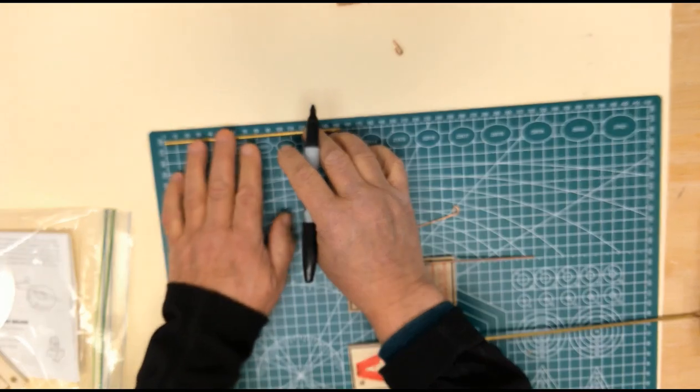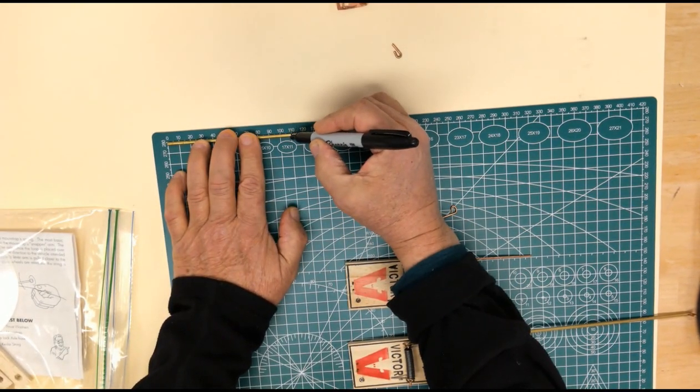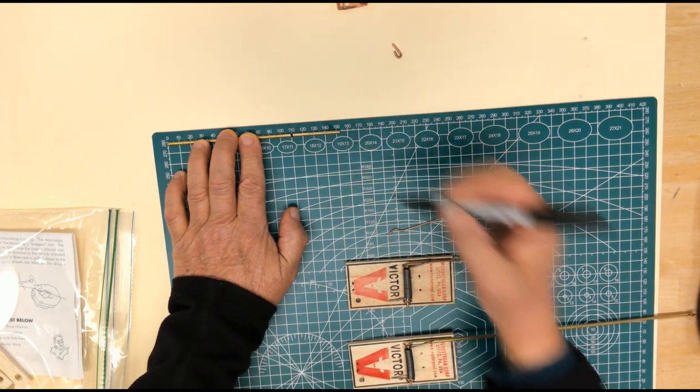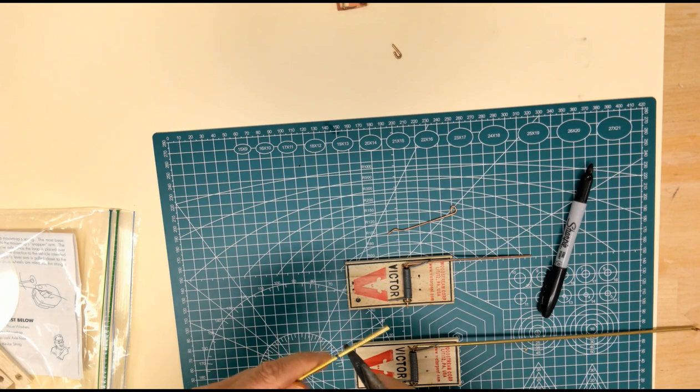So use a ruler. I use the hobby mat to mark it. I'm going to go 110. So I'm marking it at 110.